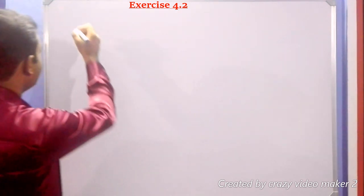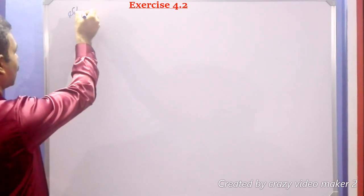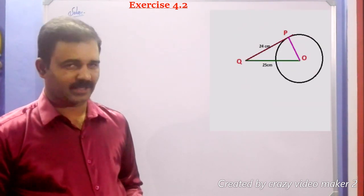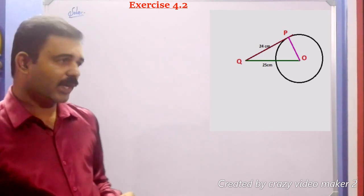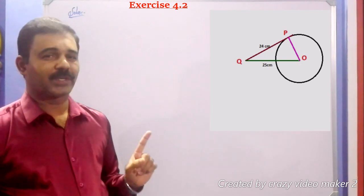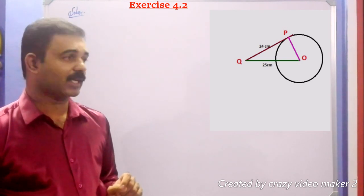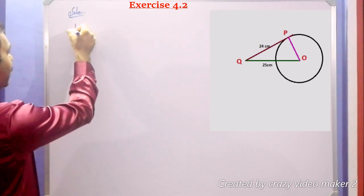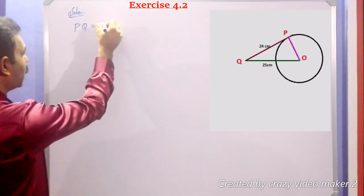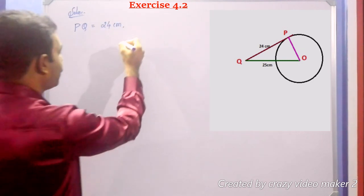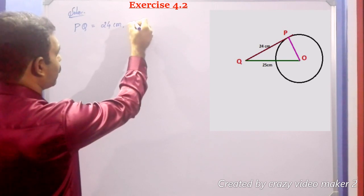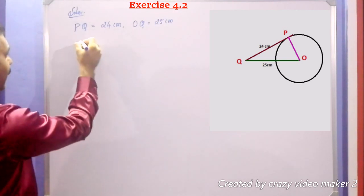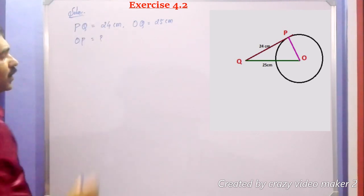Taking the solution. See the figure. Here, O is the center of the circle and Q is the external point. The length of the tangent PQ equals 24 cm and OQ equals 25 cm. Then the radius of the circle OP is unknown. The distance from the center to the external point Q is OQ equal to 25 cm, and the radius OP is to be found.